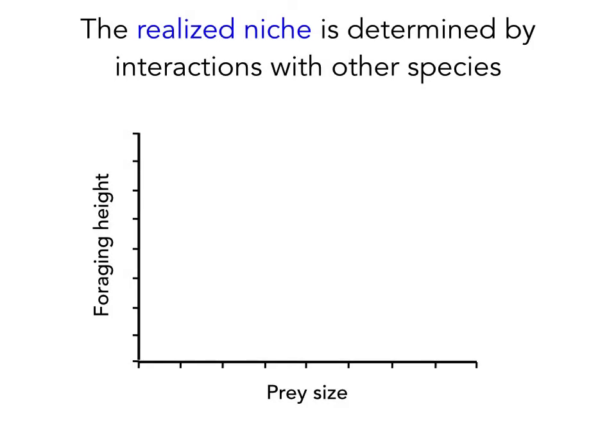If a species occupies a niche that another species also uses, and in natural communities many different species interact and compete for some of the same resources, then two species will overlap in their niche space and be in direct competition. In this scenario, the better competitor will encroach on the niche of the less competitive species, thereby reducing the niche space it's actually able to use. This is called the realized niche — the niche that results from the interaction of a species with other species that overlap in its niche space.